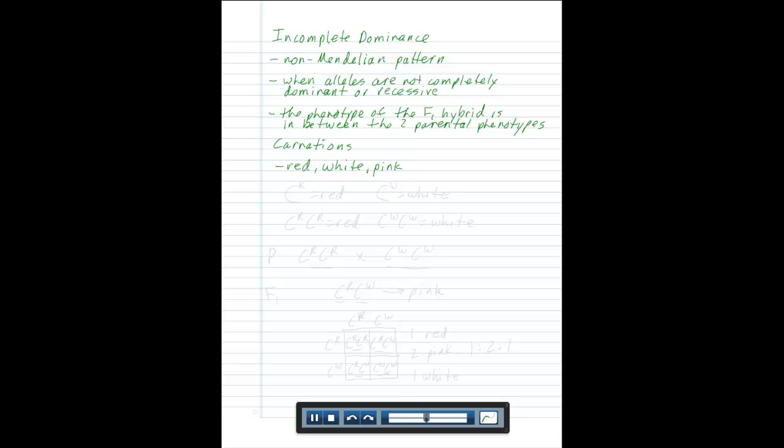If we identify alleles, we're going to use a little bit different notation than we've seen before. We use a big C for color and then we'll have an exponent or superscript with an R which will give us the red allele. By contrast, we have a capital C with a W for the white allele.